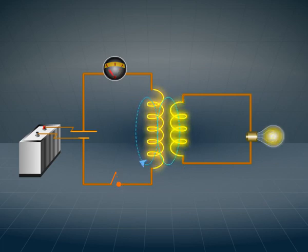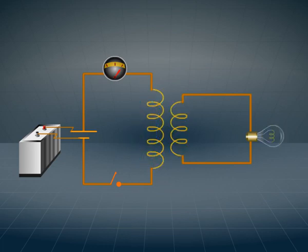When the switch in the first coil is turned off, the current decays from maximum to zero. This also produces a flux change in the second coil, which produces an opposite current in the second coil. If the first coil is connected to an AC source, an AC current of the same frequency is developed in the second coil.